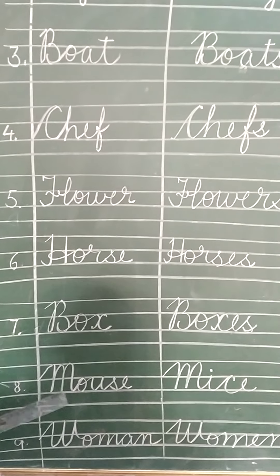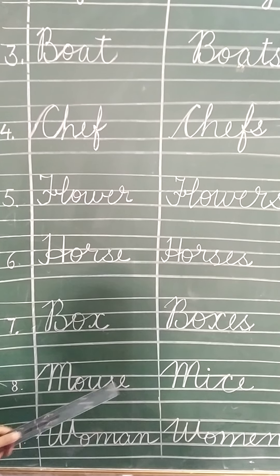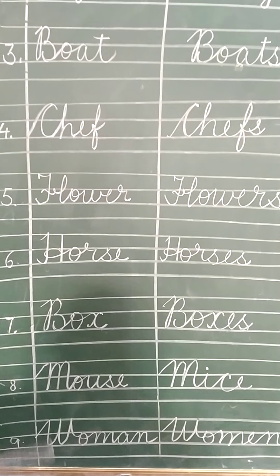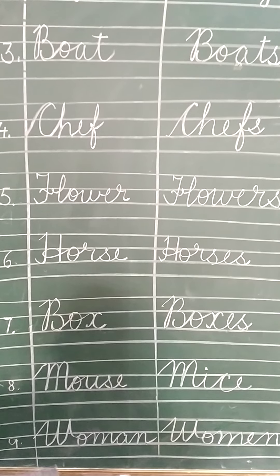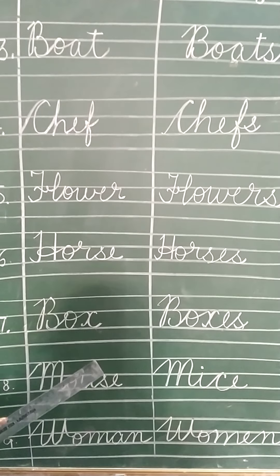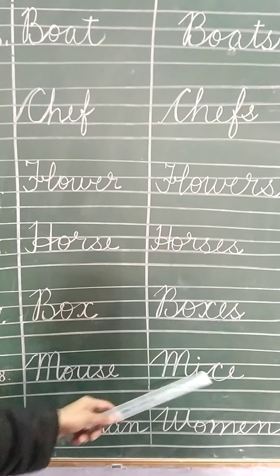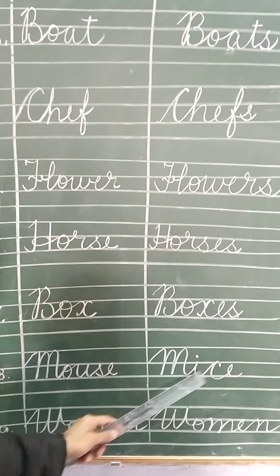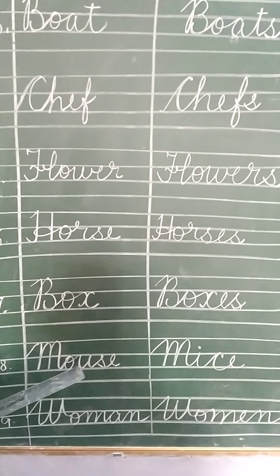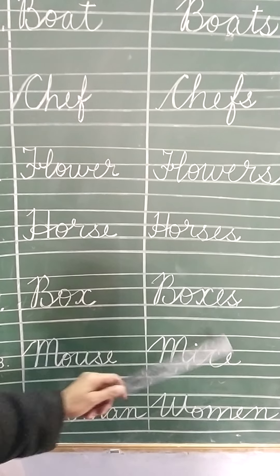Number eight is mouse — M, O, U, S, E. Sometimes the spelling is changed. We don't add S, ES, or IES — it becomes a changed spelling: mice — M, I, C, E. Mouse means one rat; more than one, it becomes mice.